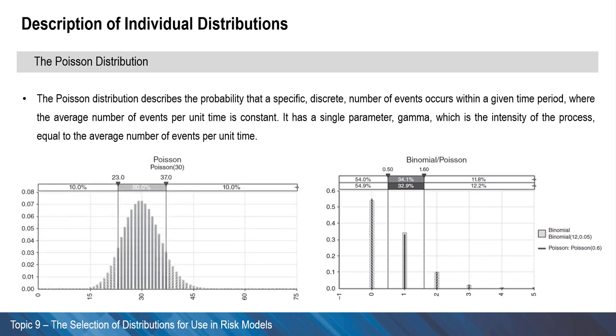Alternatively, a Poisson distribution with its intensity of 0.6 would capture the annual number and may be unbounded, although higher numbers are less likely.